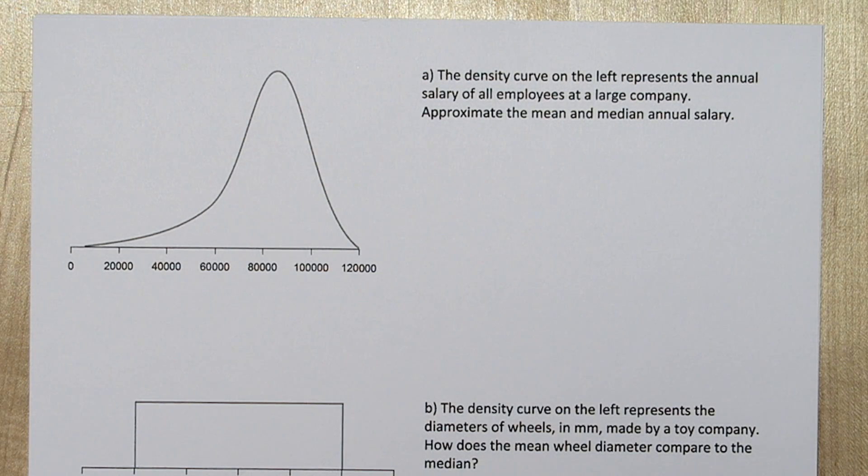The median on a density curve is the equal area point, a point that has equal area both to the left and right of it.